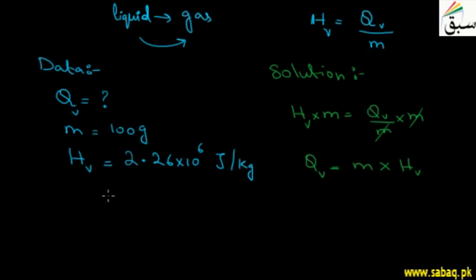So in this case, we input values. QV equals m, and we need to convert 100 grams. Since the unit of mass is kg and 1 kg equals 1000 grams, we get 0.1 kg.